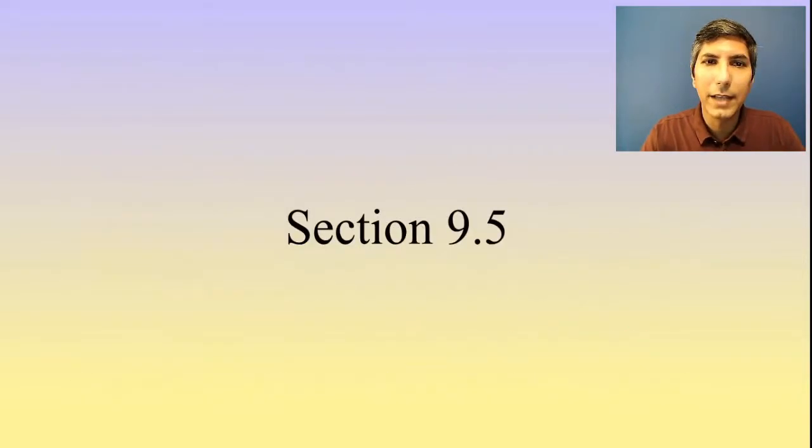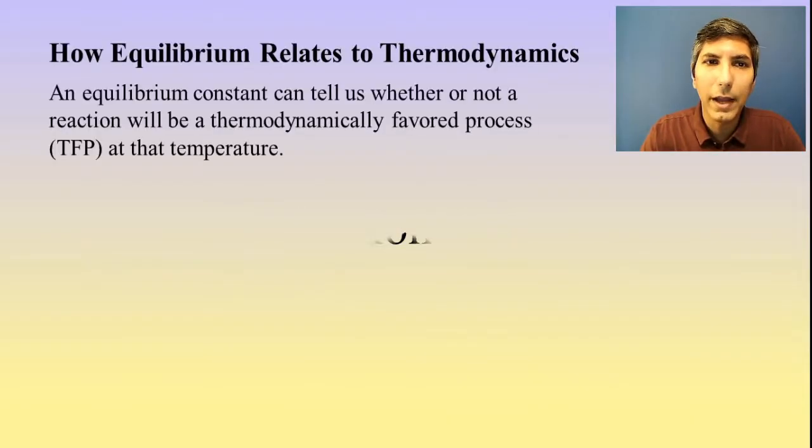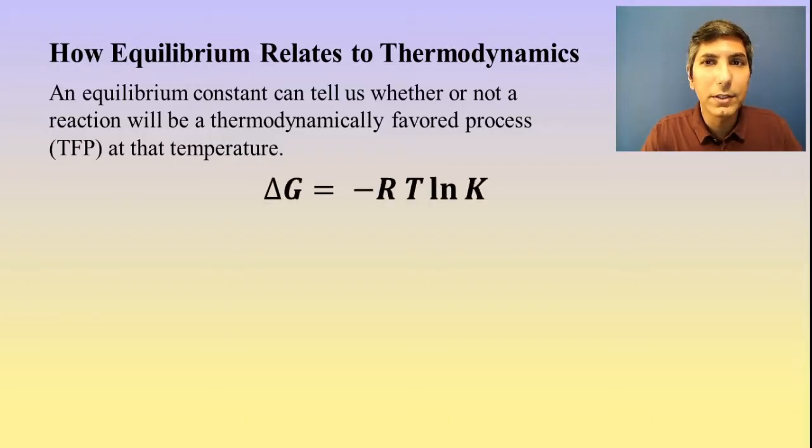Now, as we move on to section five, we're going to talk about how we can relate equilibrium, which we learned about in unit seven, to thermodynamics. We can actually use an equilibrium constant to tell whether or not a reaction is going to be thermodynamically favored at a certain temperature. This is the equation that we use to make that calculation: delta G equals negative RT times the natural log of K.